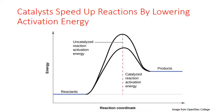Catalysts are substances that speed up a reaction but are not used up in the reaction. They do this by lowering the activation energy, as indicated on a general energy diagram. Catalysts work by creating an alternative lower energy activated complex with the reactants. This lower energy complex is a little bit more stable, and with a lower barrier to go from reactants to products, the reaction occurs more quickly.